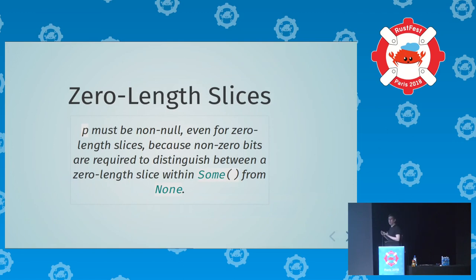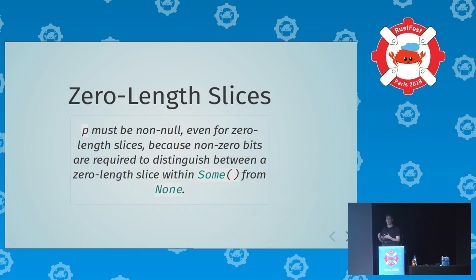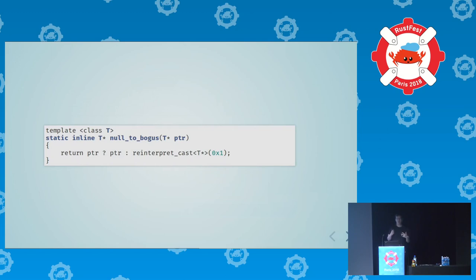A key difference between slices and spans is that a zero-length span can contain a null pointer. A slice can never contain a null pointer because Rust has an optimization where an Option<slice> takes the same space as a slice, and to distinguish Some wrapping a zero-length slice from None, we need some non-zero bits in the pointer as a discriminant. So when you take pointers from a span to create a slice, you have to replace any null pointers with bogus non-null pointers.